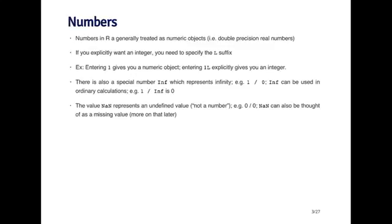There's another special value called NaN, and this represents an undefined value, so you can think of it as not a number. So for example, if you take zero over zero, that's not a number, it's not defined. So you'll get a NaN back. NaN can also be thought of as a missing value, but we'll talk a little bit more about missing values a little bit later.